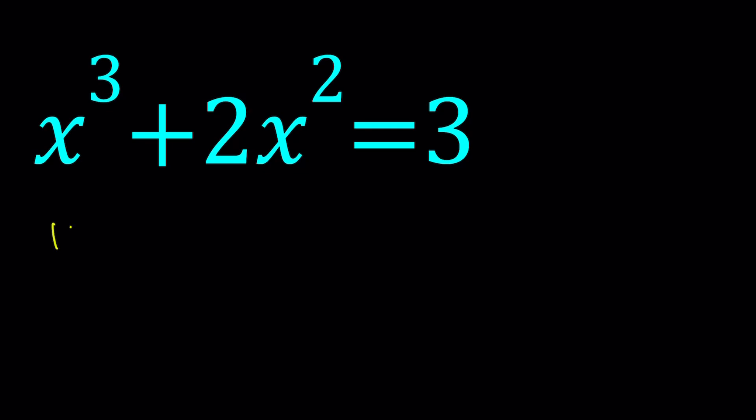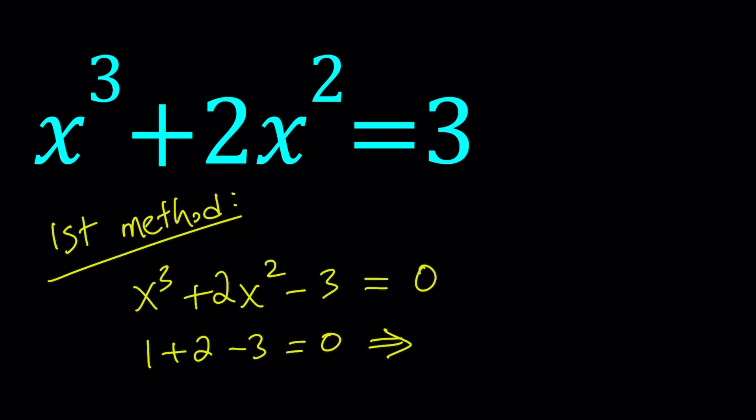Let's start with the first method. When you see an equation like this, one of the things that I would always like you to check is the sum of the coefficients. Obviously this is not a complete cubic, you want to put the 3 on the left hand side, and then you get your cubic. Notice that the x term is missing, but that's no big deal. Now when you check the sum of the coefficients, which is 1 plus 2 minus 3, you notice that it's 0. So this is a really good thing to have, and that means x equals 1 is a solution.